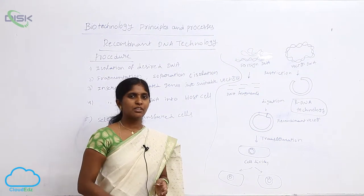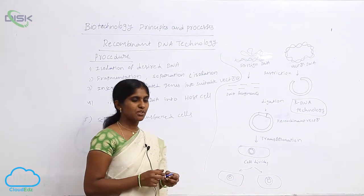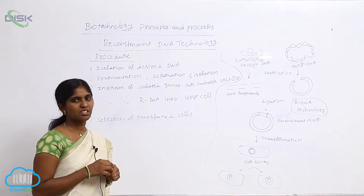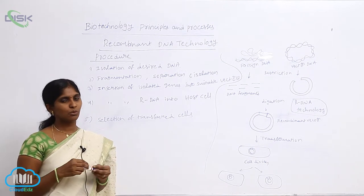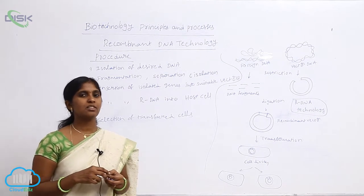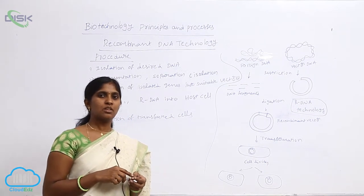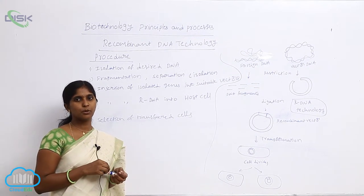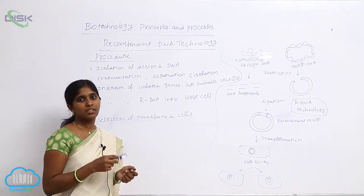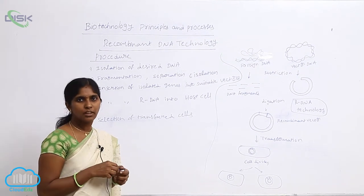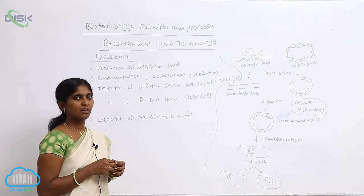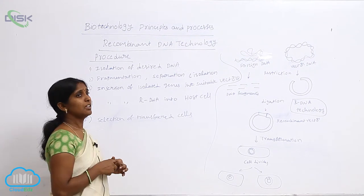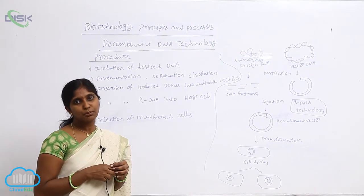In recombinant DNA technology, different tools are used: restriction enzymes, cloning vectors, competent hosts, PCR, agroinfection, gel electrophoresis, and gel documentation systems. These different tools are used for rDNA technology.